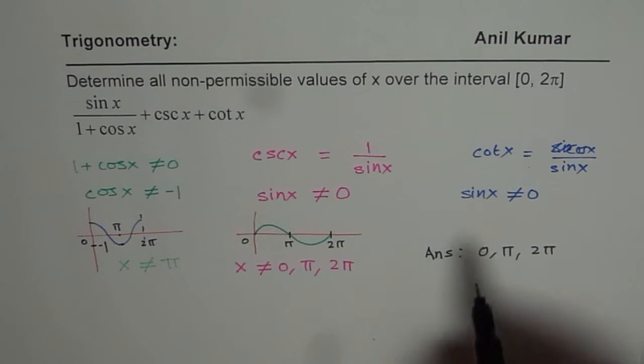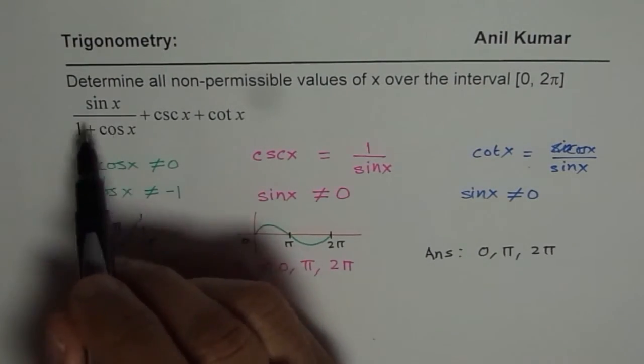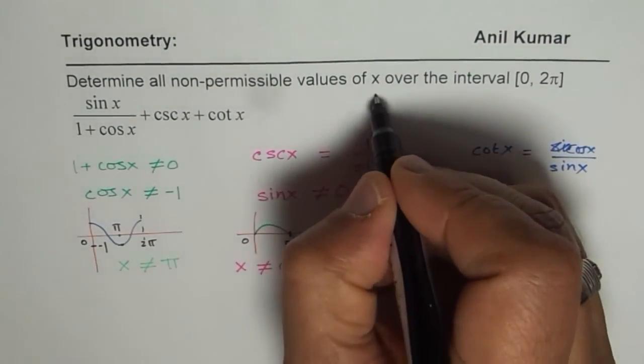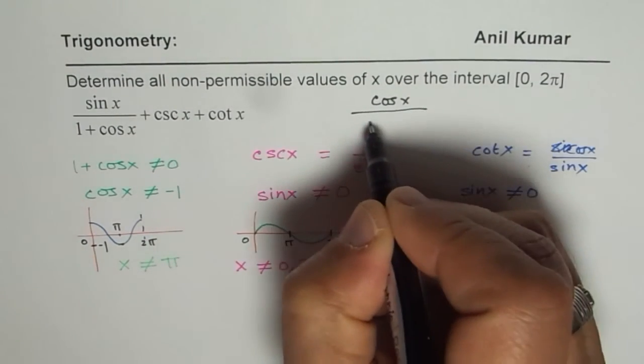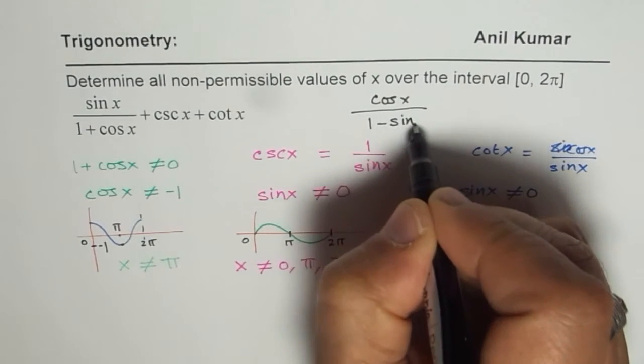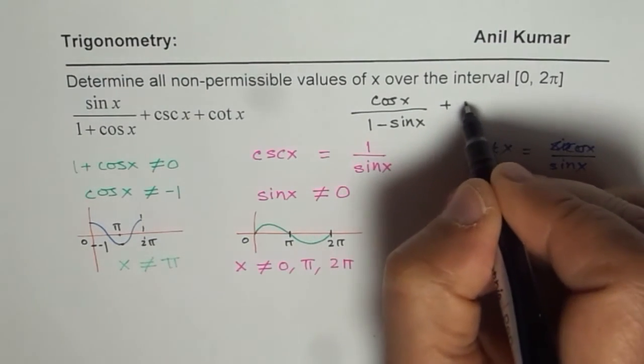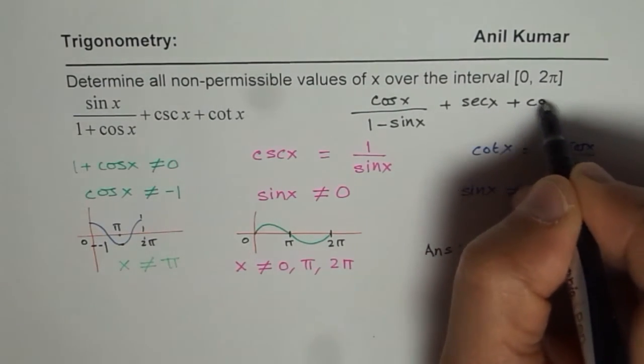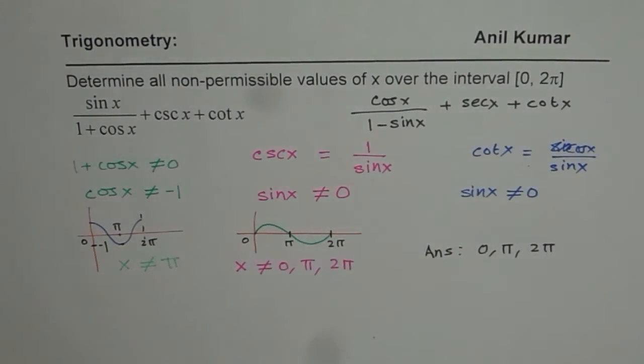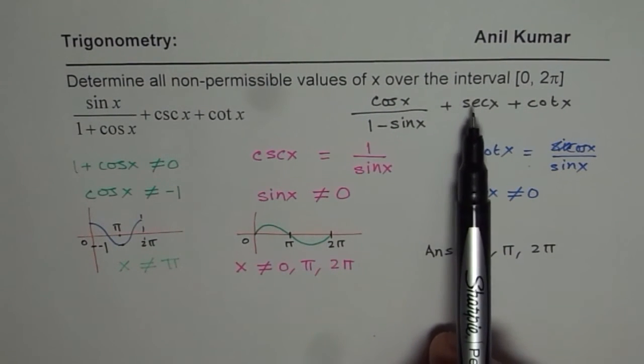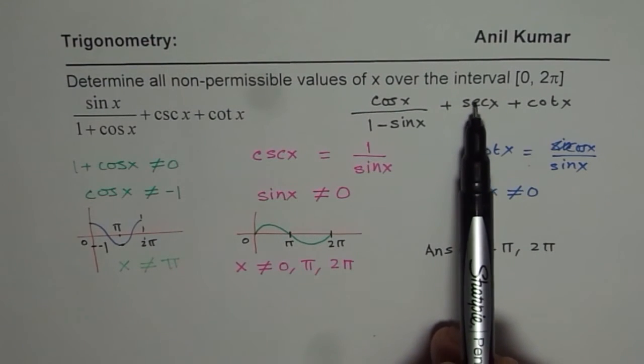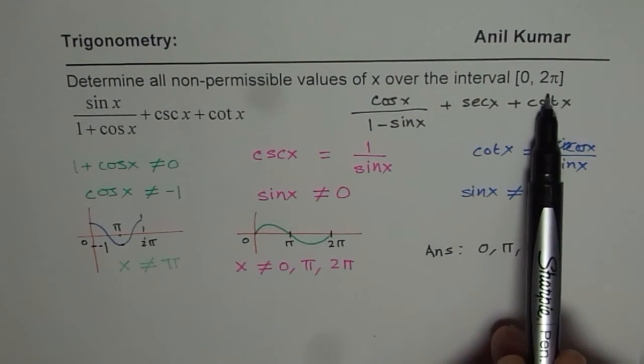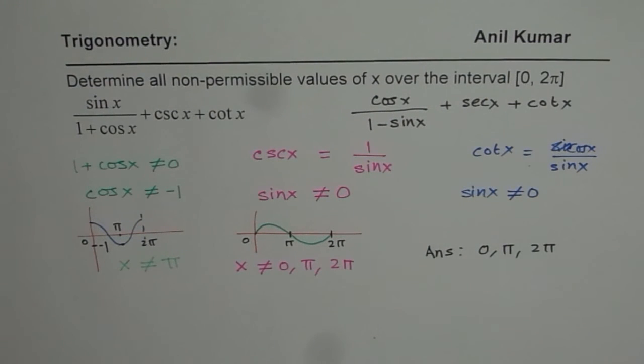Now as a practice question, you can find non-permissible values for, I will just change this expression. And let me write this expression as cos x over 1 minus sine x. See, I have changed it a bit. Plus secant x plus cotangent x. I am keeping 1, same. So write down the restrictions for this particular expression in the interval 0 to 2π. Follow the steps. So 1 minus sine x cannot be 0. Denominator of secant x is 1 over cos x. And here, cos over sine, which is kind of the same. So write down all the restrictions for this particular expression.